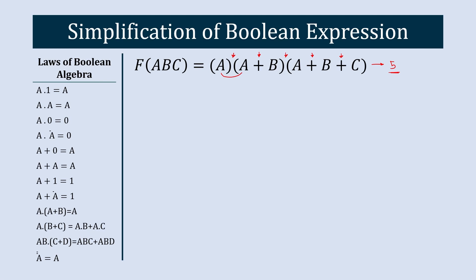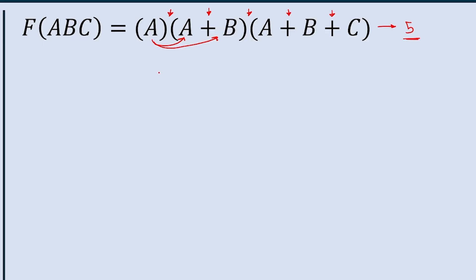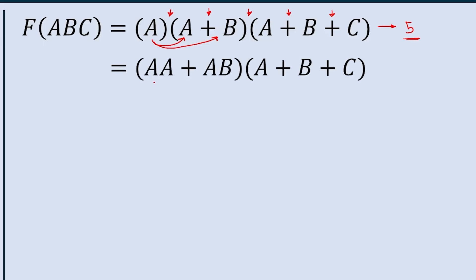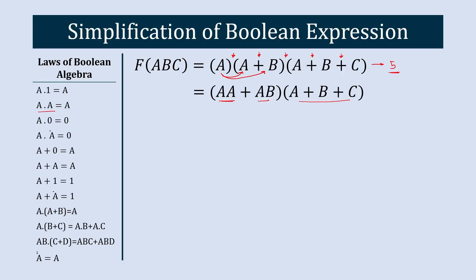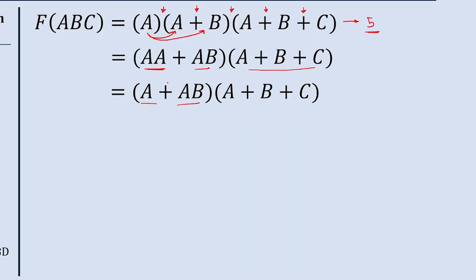In Step 1, we are going to multiply the first two terms. As a result we get A·A plus A·B. These terms stay as they are. As per Boolean law, A·A is equal to A, so we get A + A·B, and then multiply by (A+B+C).